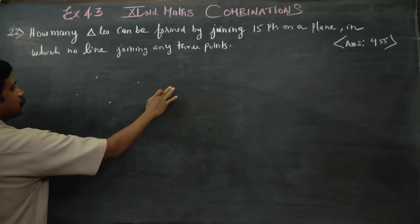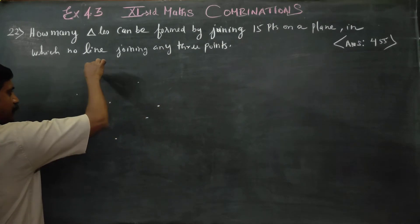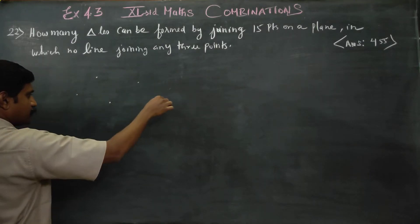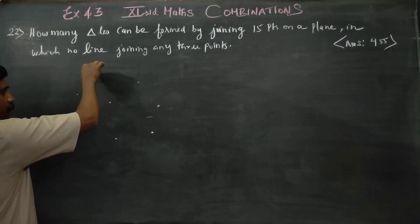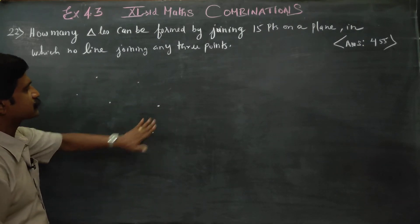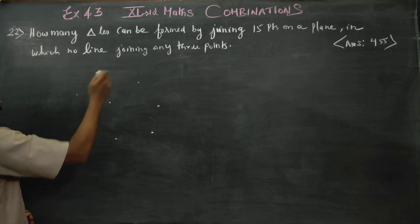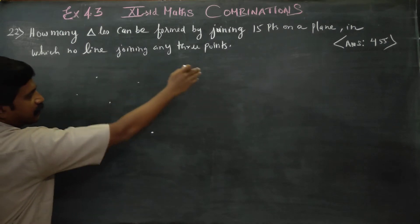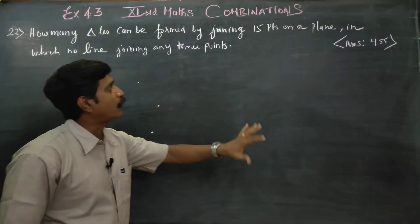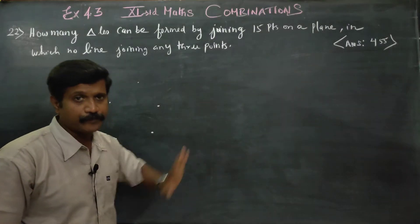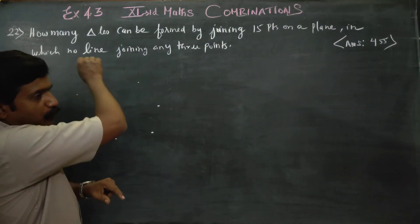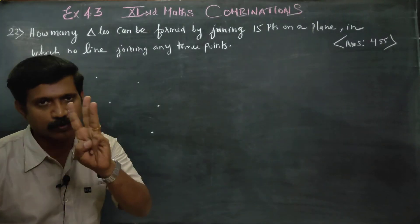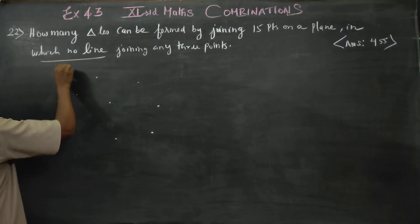No three points will be a straight line. You will not get a straight line. 1, 2, 3, 4, 5, 6, 7, 8, 9, 10, 11, 12, 13, 14, 15 points are on this blackboard. No three points are on the same line - they are not collinear.